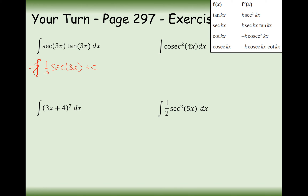For the next part, cosec squared has a negative in front of it. So if I want to make that positive at the front, I have to have a negative integral. So I'm going to get minus 1 over 4, because there's a 4 inside the bracket multiplying by the x, times by cot(4x) plus c.